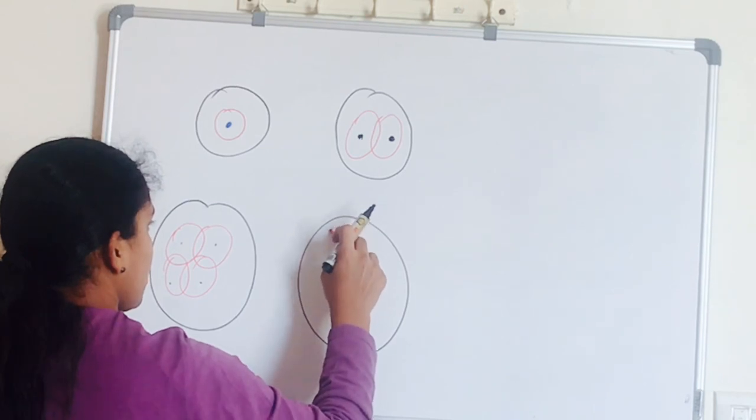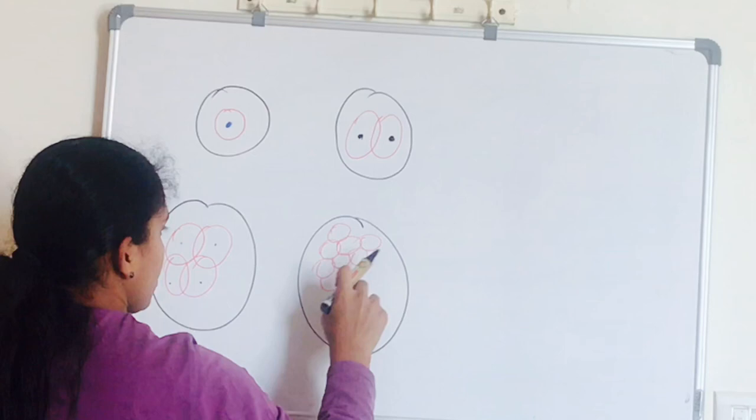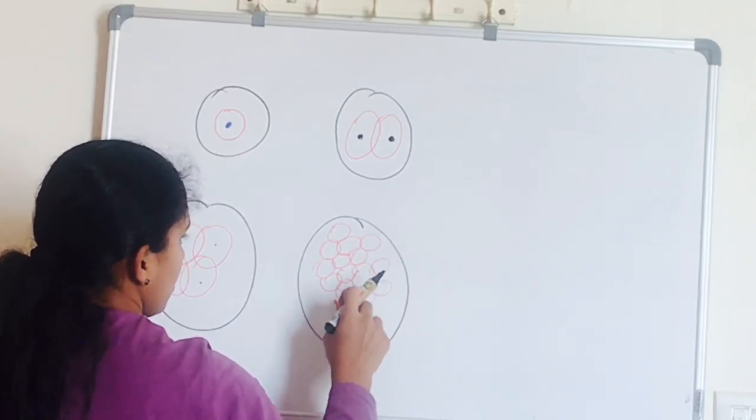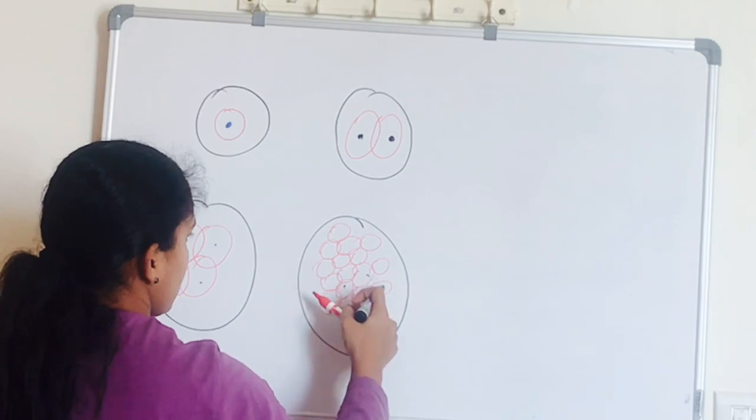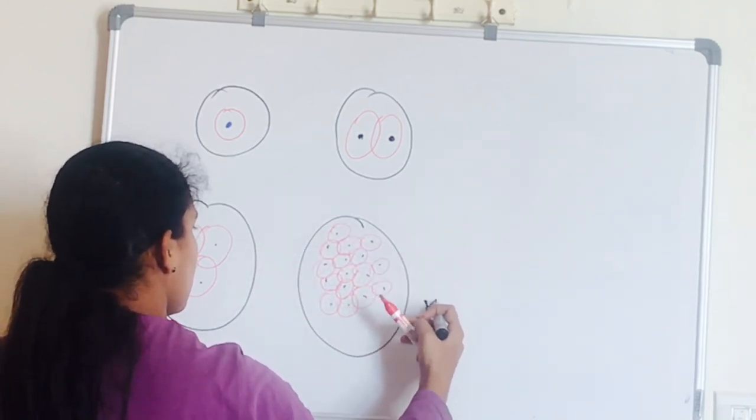This process of subdivision of the ovum into smaller cells is called cleavage. As cleavage proceeds, the ovum comes to have 16 cells which looks like a mulberry, and this stage is called morula.